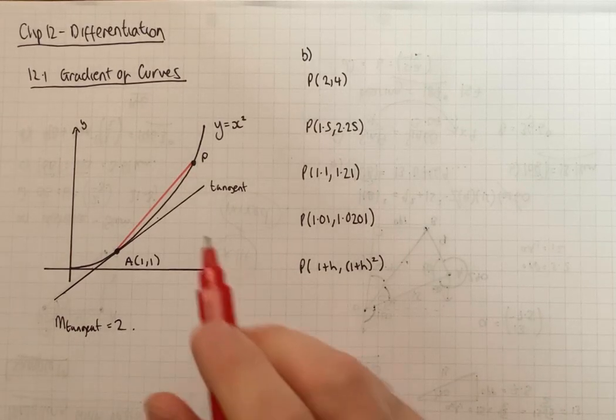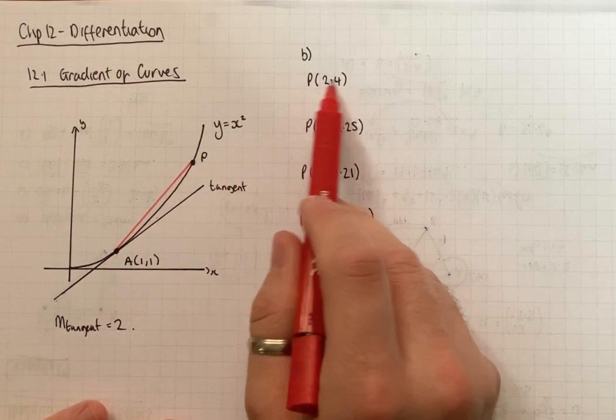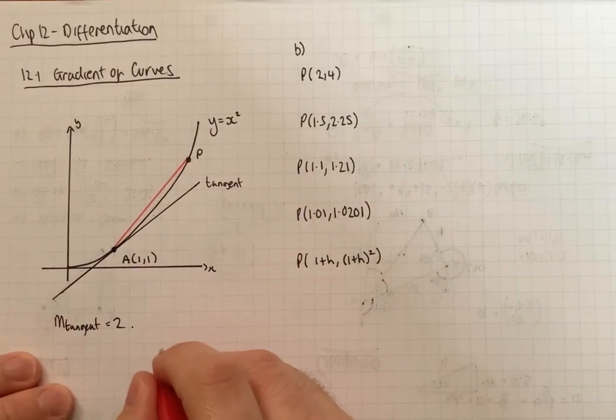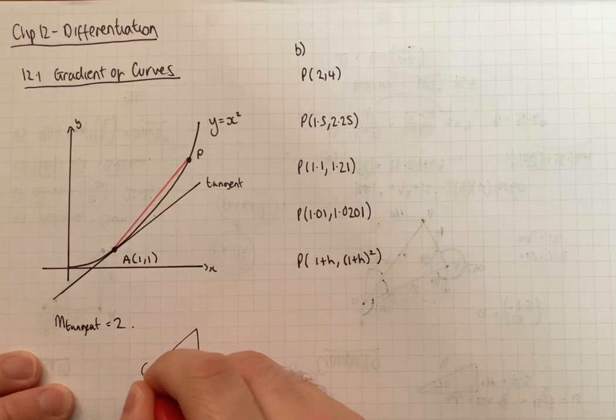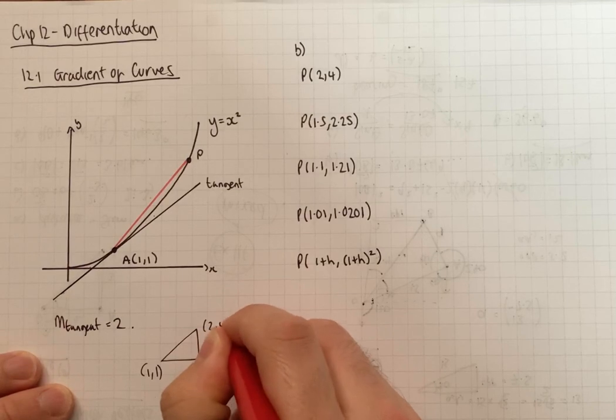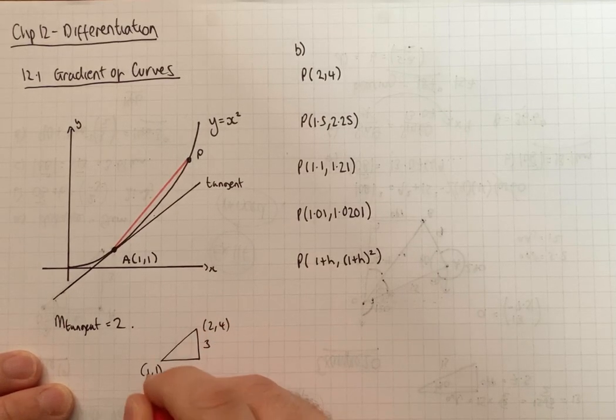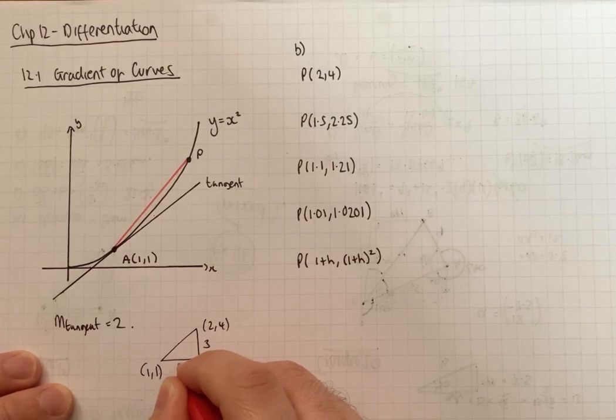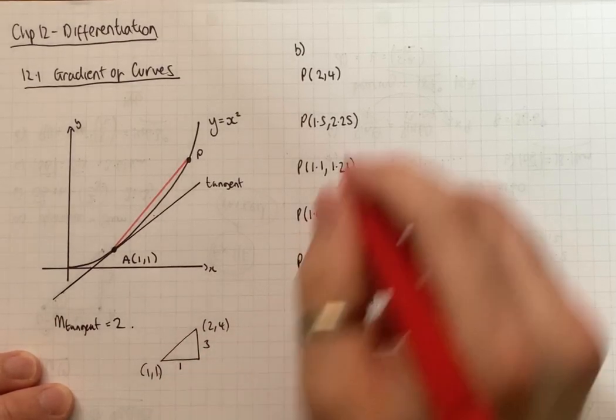So if we wanted to work out the gradient of A to P where P is 2, 4. Well, that's 1, 1. And that's 2, 4. The vertical distance is 4 to 1 is 3. Horizontal distance 1 to 2 is 1. So the gradient is 3.